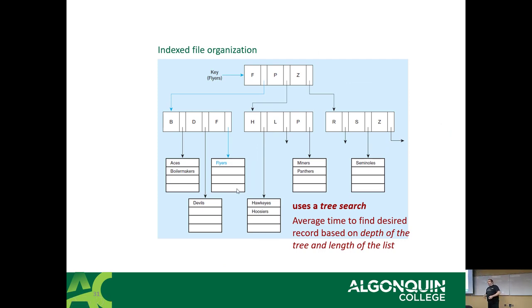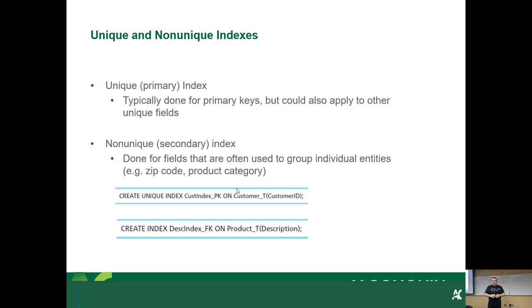And if we were looking for something that starts with a D, it would go, Hey, are we between A and F? Yes. It would drop down to the next block. It would go, is it A to B, D or E or F? Well, it's D or E. It would drop down and then it would divide it one more time if it had to. So the average time to find the records based on the index is usually a factor of the depth of the tree and how long each list is.